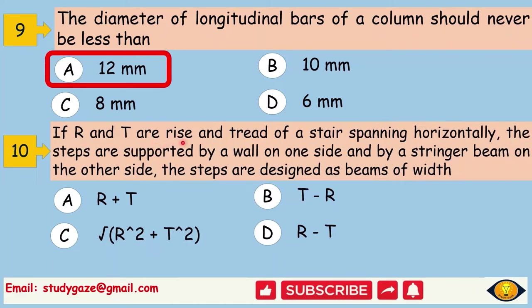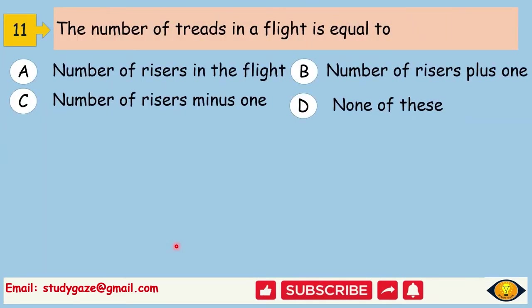If R and T are rise and tread of a stair spanning horizontally, the steps are supported by a wall on one side and by a stringer beam on the other side. The steps are designed as beams of width. The answer is under root R square plus T square. The number of treads in a flight is equal to. Answer is number of risers minus 1.